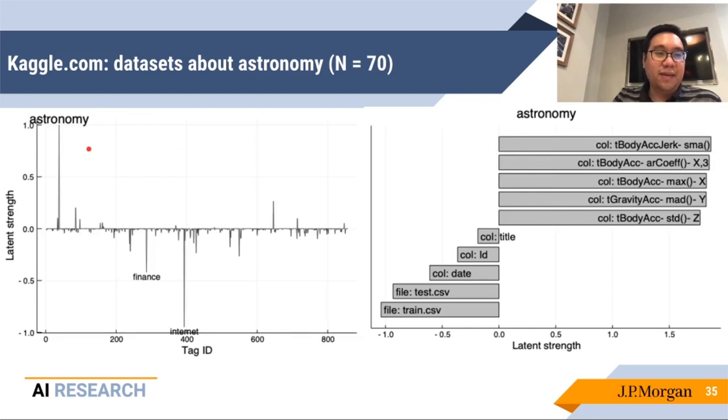Astronomy seems to be a topic that occurs mainly by itself. There's not much positive correlation with other tags, so it doesn't really co-occur of any other subject label. Now what's interesting here is that the top five most predictive column names have names like body, gravity, something that looks like acceleration, something that looks like jerk, and something that looks like xy and z coordinates. So it's quite promising that the presence of these column names are suggestive of the presence of maybe some sort of astronomical simulation or observational data.